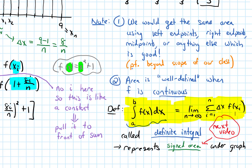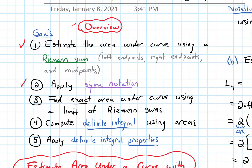Signed area just means: if our graph goes above the x-axis, that's counted as positive area, but when it goes below the x-axis, it counts as negative area. We'll talk more about that in the next video. In terms of our goals for this section, we've finished goal 3: to find the exact area under a curve using a limit of Riemann sums.